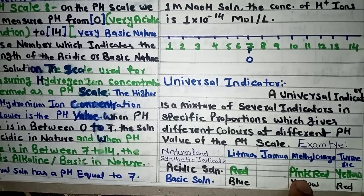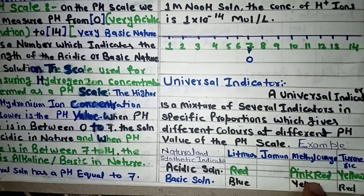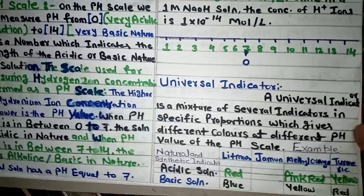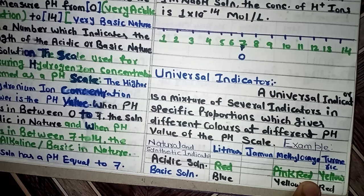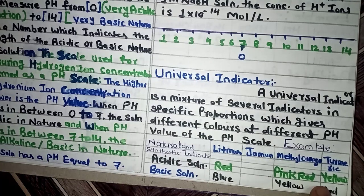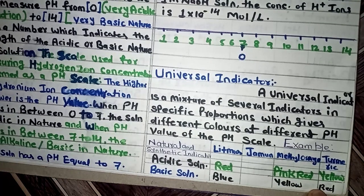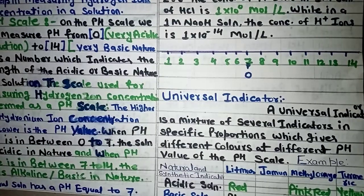Continuing with indicators: methyl orange turns pink in acidic solution and yellow in basic solution. Turmeric: in acidic solution it appears yellow, and in basic solution it turns red. This completes our discussion of indicators. The universal indicator will be further explained in the next lecture, along with the neutralization reaction.